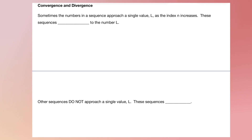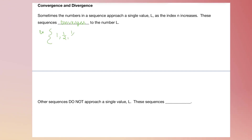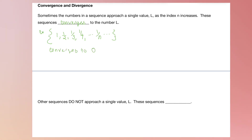One thing we'll focus on in this unit is whether a sequence or series converges or diverges. Sometimes the numbers in a sequence approach a single value — if it converges to a single value, it's called a convergent sequence. For example, the sequence 1, 1/2, 1/3, 1/4, all the way to 1/n converges to 0, because these numbers get closer and closer to 0 as n increases.